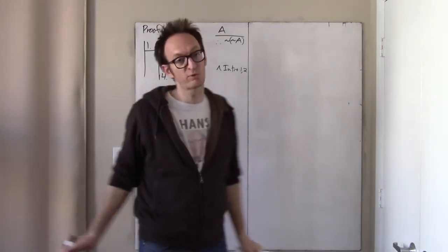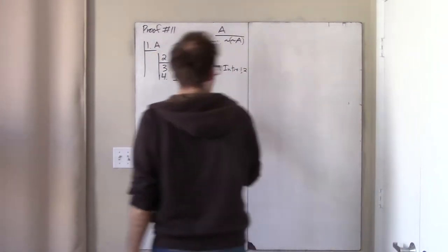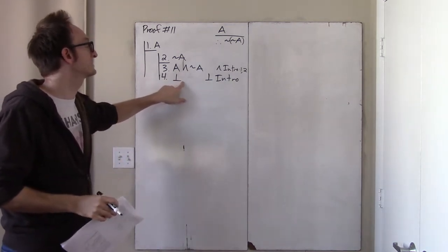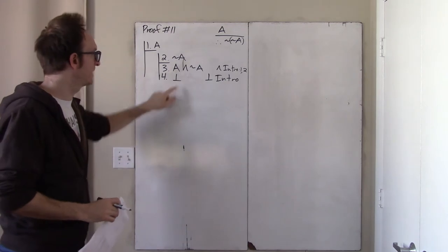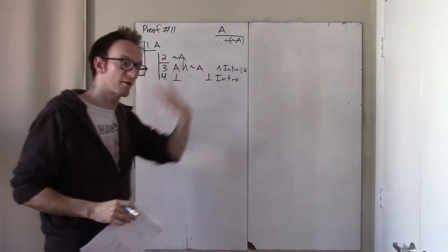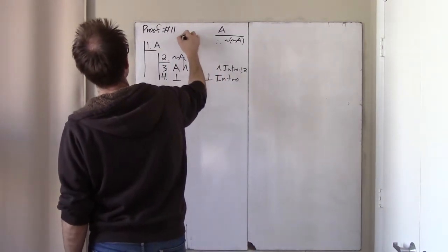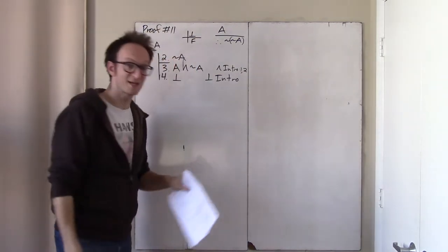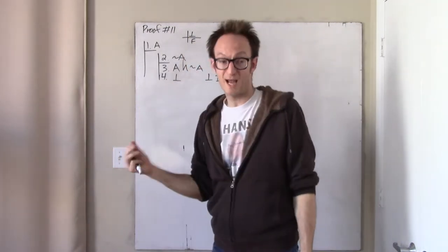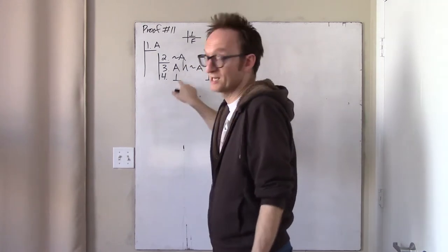Not every Fitch-style proof system employs this particular symbol, but it's very useful to have this rule. It's called bottom-intro, and bottom is a symbol that means always false — technically speaking, it's a connective which connects zero propositions together. The truth table for bottom is just false; it's always false. But it is itself a proposition, so it's a formal part of the actual language — an entire proposition consisting of just one symbol, and it's just always false.